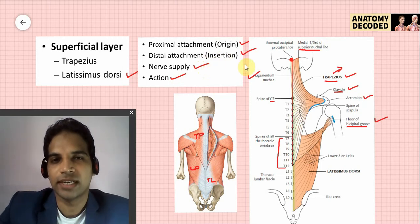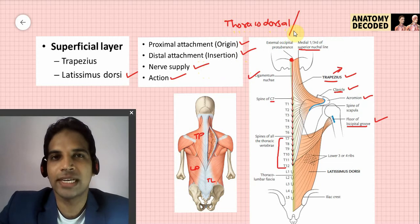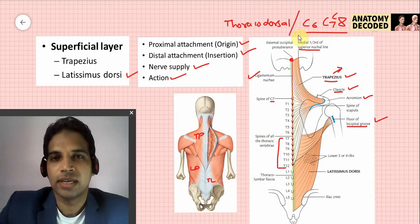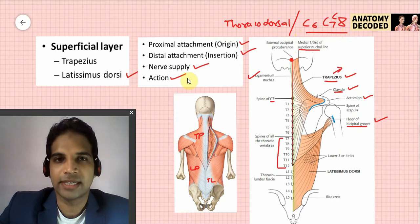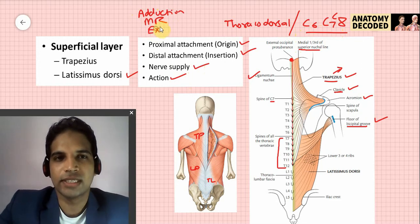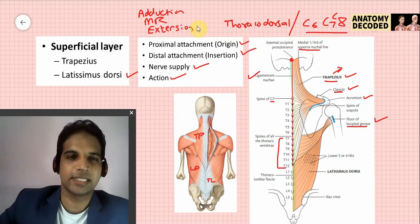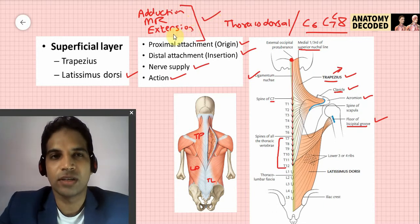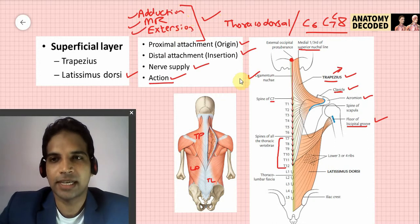The nerve supply of latissimus dorsi is the thoracodorsal nerve, also referred to as the nerve to latissimus dorsi. It arises from the posterior cord of the brachial plexus with a root value of C6, C7, and C8. The actions of latissimus dorsi can be remembered by the swimming action: adduction, medial rotation, and extension of the shoulder. This muscle is therefore also referred to as the swimmer's muscle.